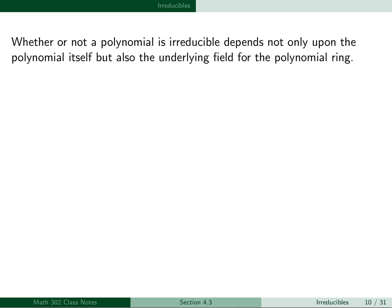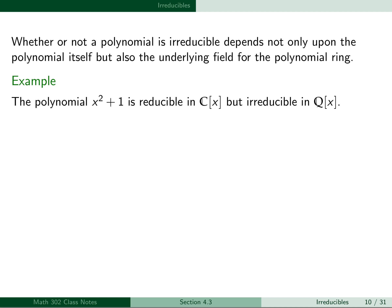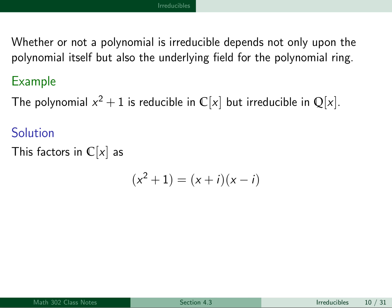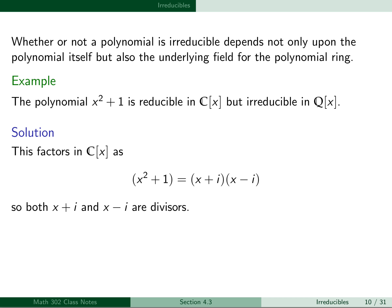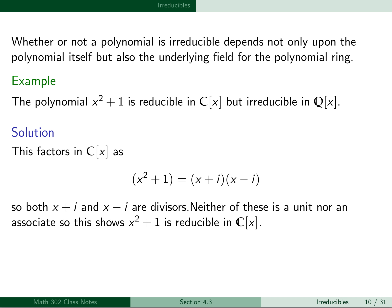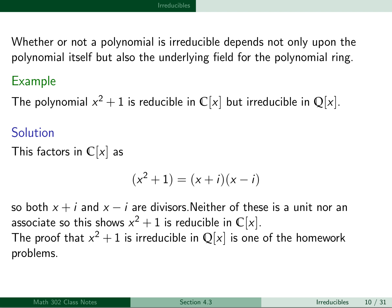Whether or not a polynomial is irreducible depends not only upon the polynomial itself, but also the underlying field for the polynomial ring. For example, the polynomial x²+1 is reducible in C[x], where C is the field of complex numbers, but irreducible in Q[x], where Q is the field of rational numbers. We can see that x²+1 is reducible by factoring it: it factors in C[x] as (x+i)(x-i), where i is the square root of -1. Both x+i and x-i are divisors, neither a unit nor an associate, showing x²+1 is reducible in C[x]. The proof that x²+1 is irreducible in Q[x] is one of the homework problems.